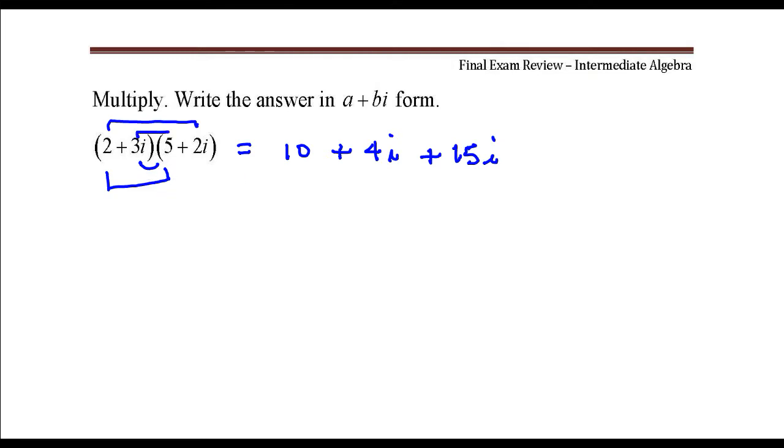Multiply the last two together, so I have 3i times positive 2i, that's positive 6i squared.